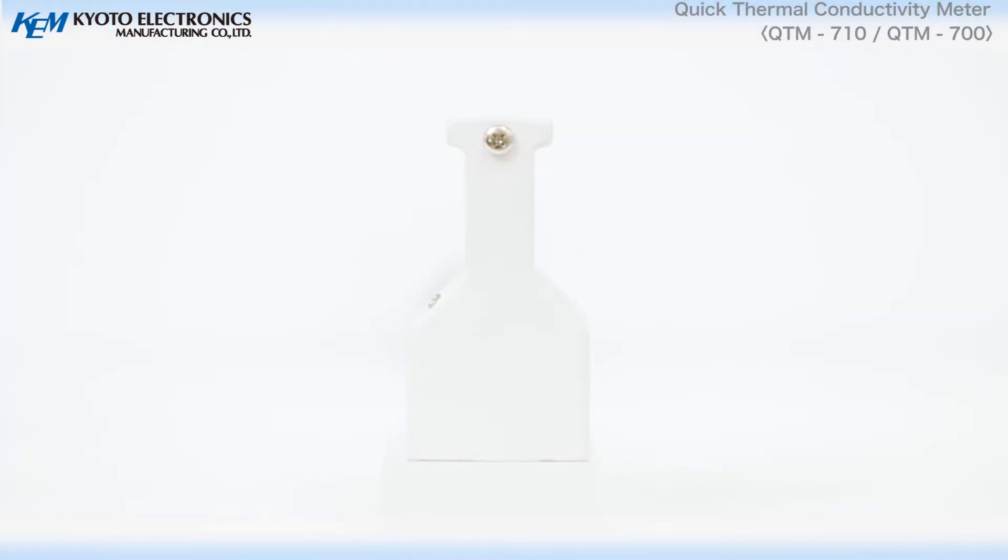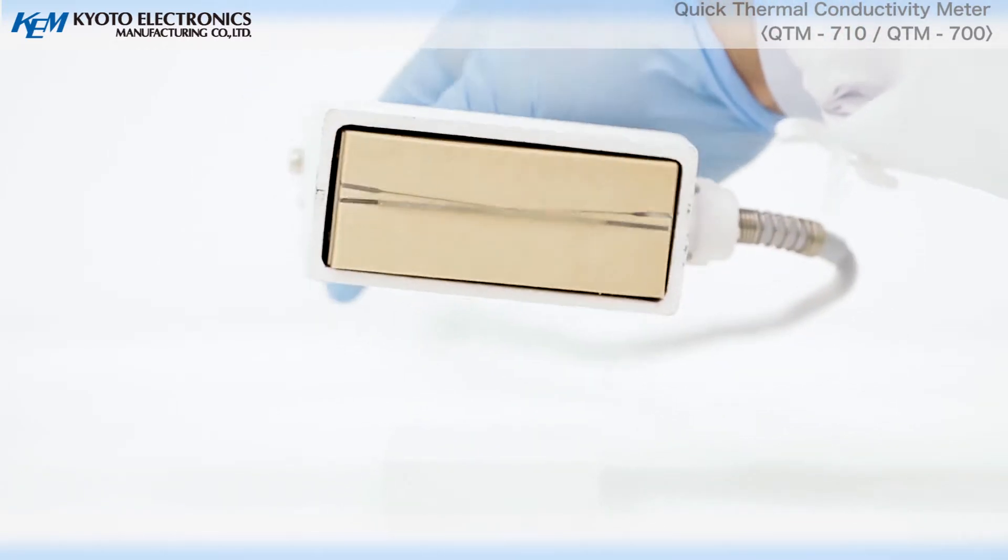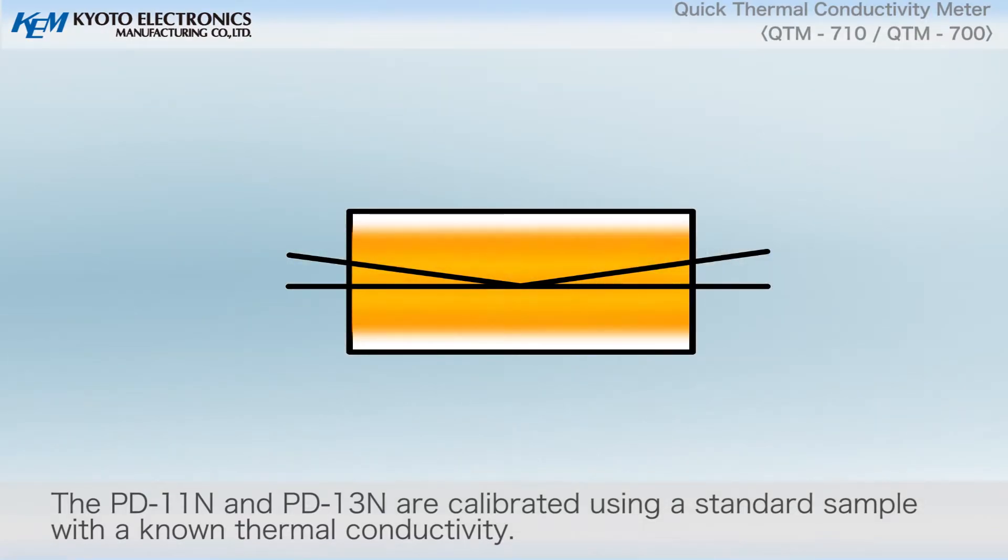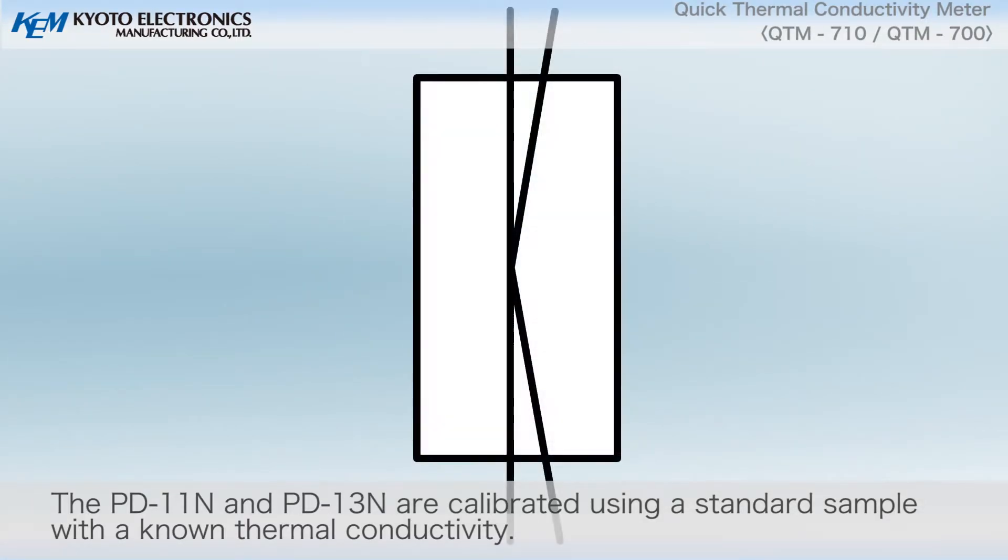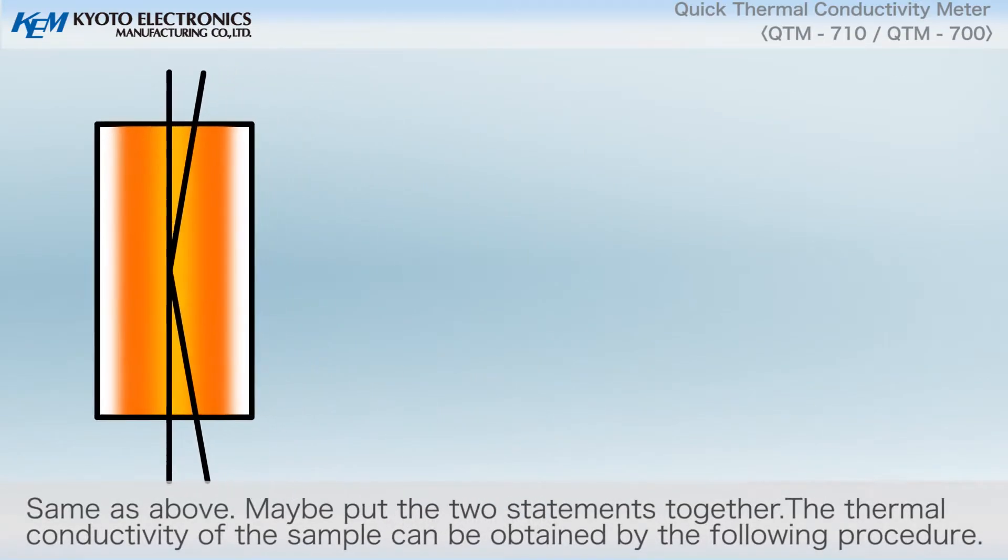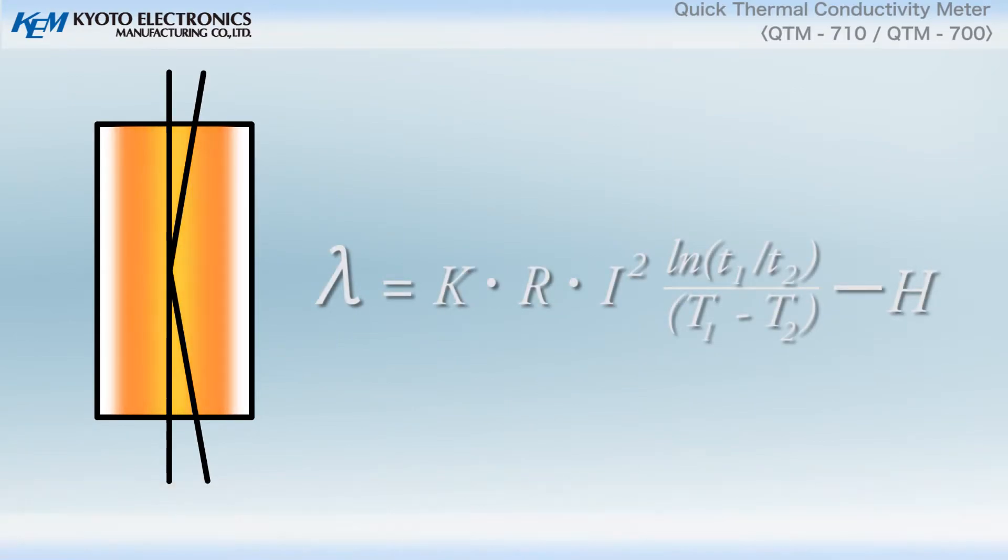With a box type probe, only one sample is required and it can be measured quickly. The PD-11N and PD-13N are collaborated using a standard sample with a known thermal conductivity. The thermal conductivity of the sample can be obtained by the following procedure.